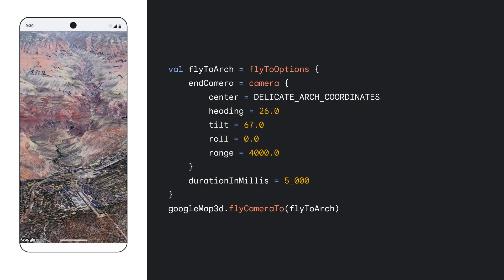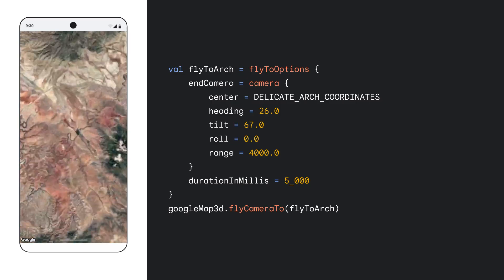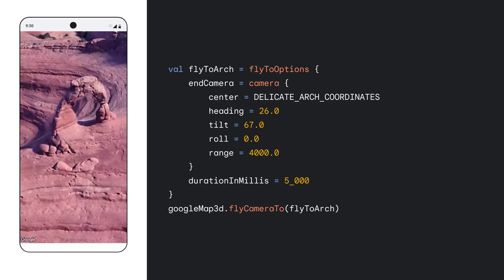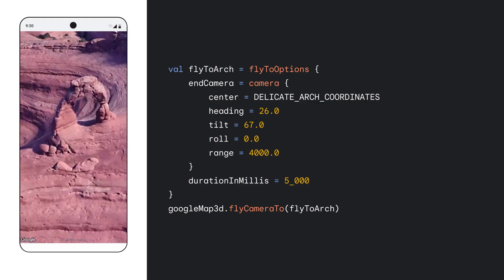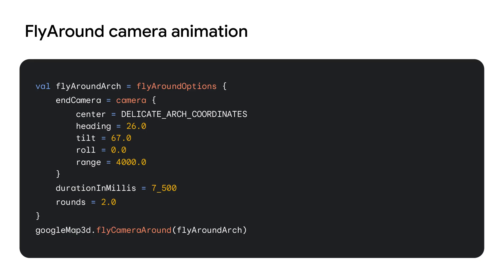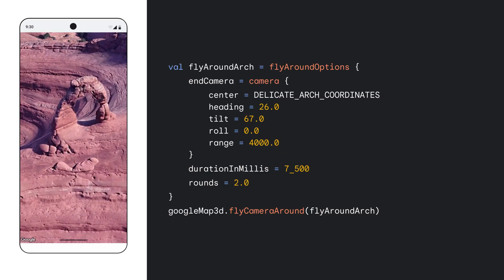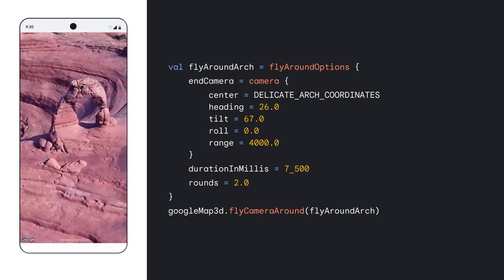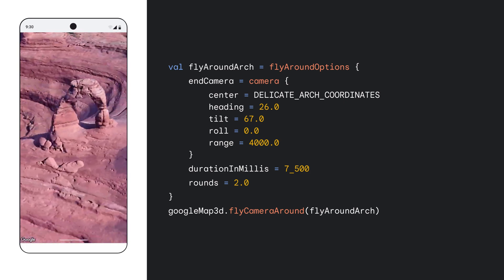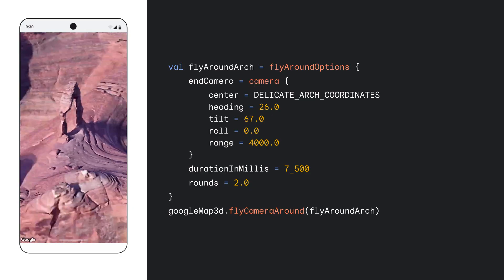The Maps 3D SDK includes two built-in camera animations: flyTo and flyAround. The flyTo method smoothly moves the camera from its current position to a specified destination over a given duration — it is analogous to the animateCamera call in the 2D Maps SDK. The flyAround animation causes the camera to orbit a specified center point at the given tilt and range; you must also specify the number of rotations and the total duration. You can stop any in-progress animation by calling stopCameraAnimation.